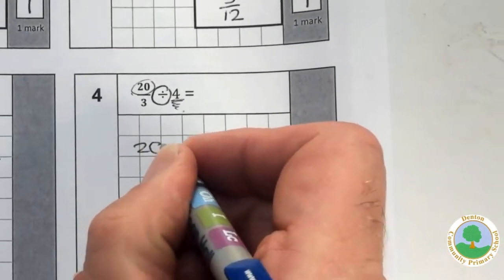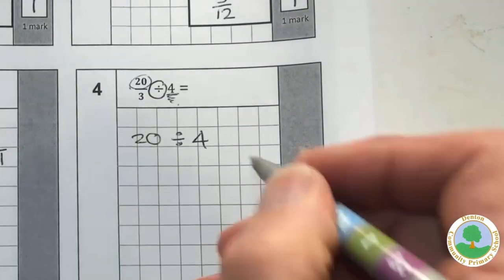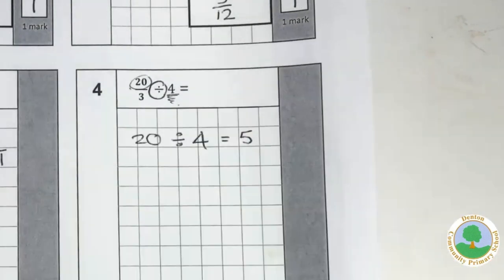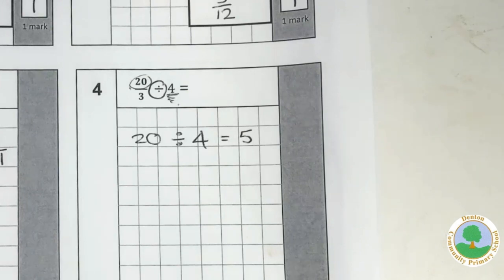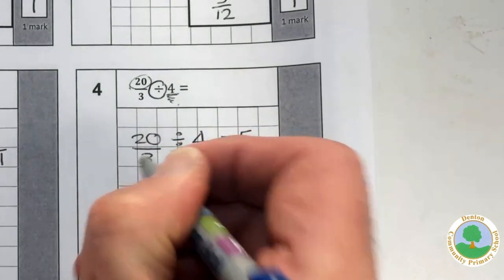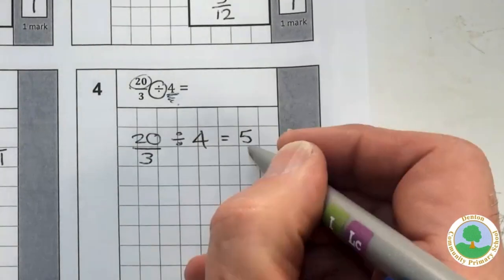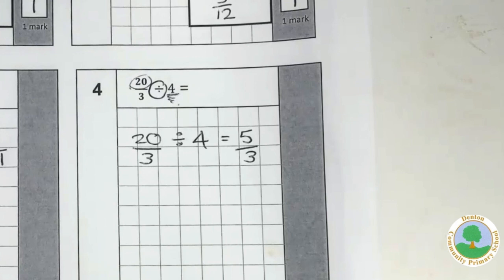If the question had said twenty divided by four, you'd have very happily said, oh, well, that's five. Well, it is twenty-somethings divided by four. It's twenty-thirds divided by four. So twenty-thirds divided by four is five-thirds. Boom.